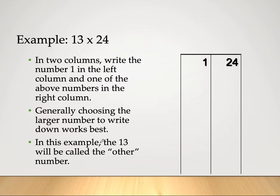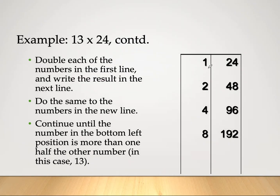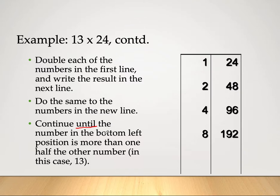The number 13 will be called the 'other number.' We double each number in the left column: 1, 2, 4, 8. We do the same in the right column: 24 becomes 48, 48 becomes 96, 96 becomes 192. We continue until the number in the bottom-left position is more than one half of the other number. Half of 13 is about 7.5, so 8 is already more than 7.5 — we stop here.